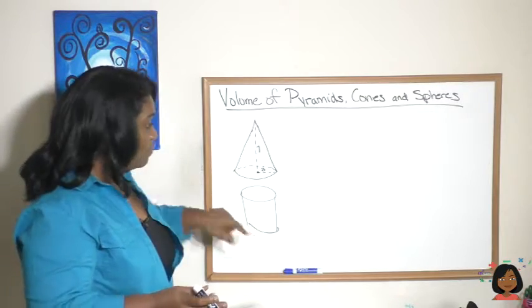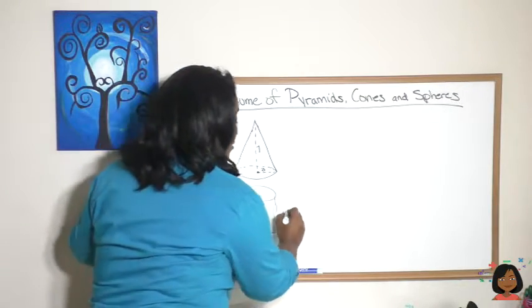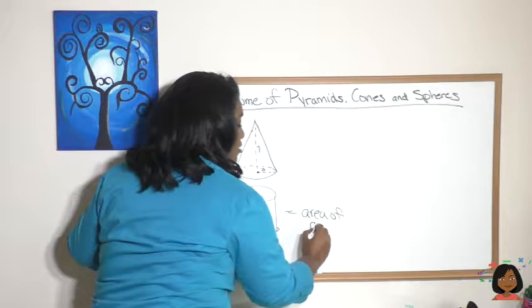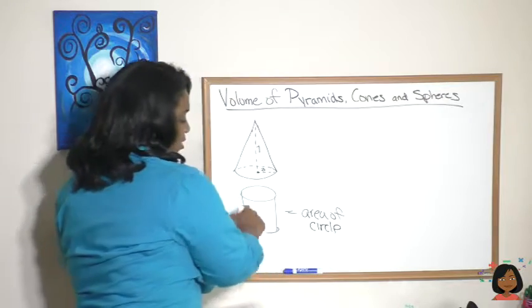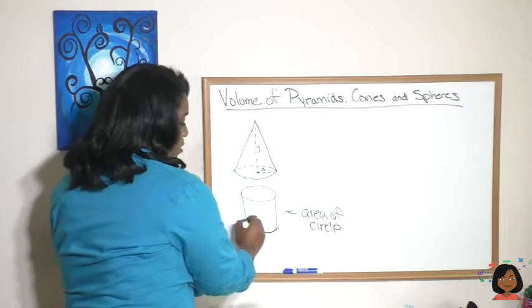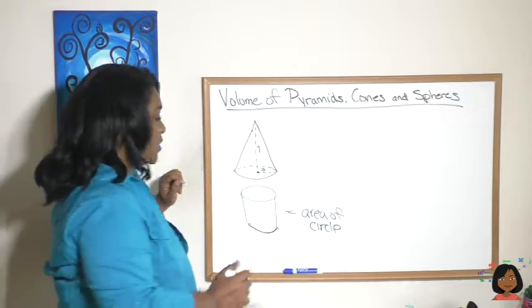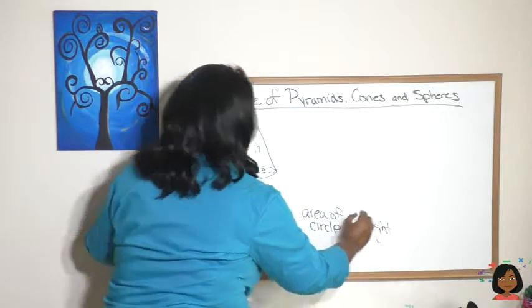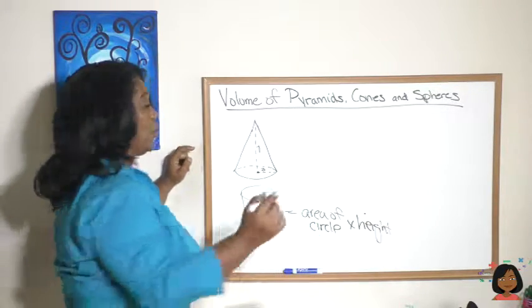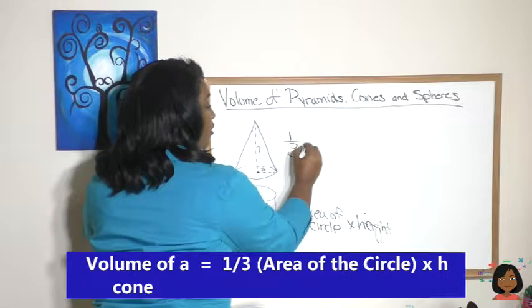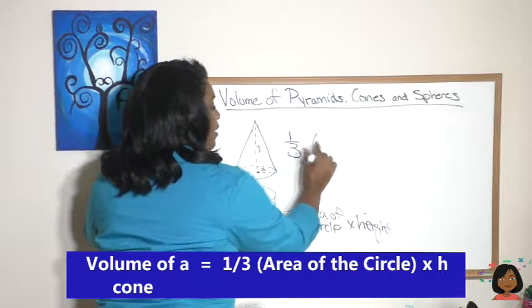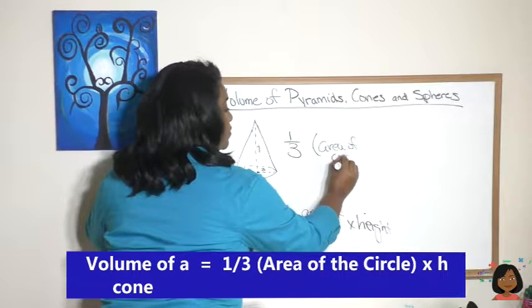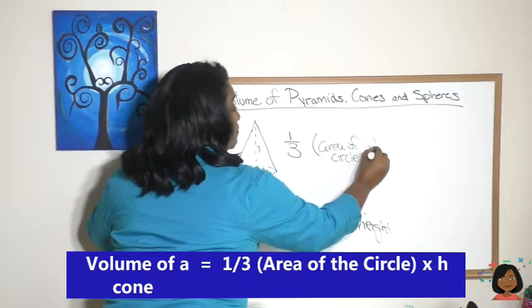So let's write the formulas down. For a cylinder we know it's the area of the circle, because that's what we're dealing with, times the height. That would be your volume. Well, for your cone it's going to be one-third the area of the circle times the height.